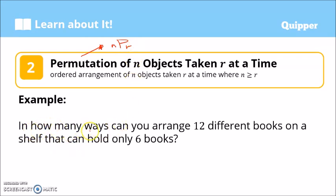In how many ways can you arrange 12 different books on a shelf that can hold only 6 books? Here, our n is 12, and the space can hold 6 books, so that's the value of r. In this case, we have nPr which would be 12P6—12 objects taken 6 at a time.